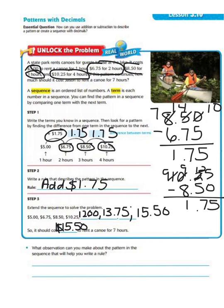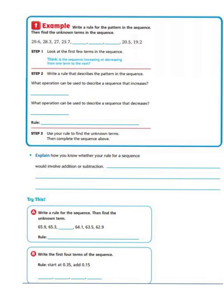Now let's take a look at the next example. It says to write a rule for the pattern in the sequence, then find the unknown terms. We have 29 and 6 tenths, 28 and 3 tenths, 27, and 25 and 7 tenths. Step one says to look at the first few terms in the sequence: 29 and 6 tenths, 28 and 3 tenths, 27, and 25 and 7 tenths.